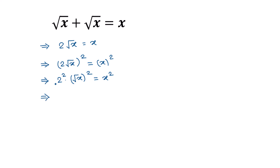2 squared will be 4, and this square root and this square will cancel out, and it will be 4x is equal to x square. Exchanging sides, we will get x square is equal to 4x.